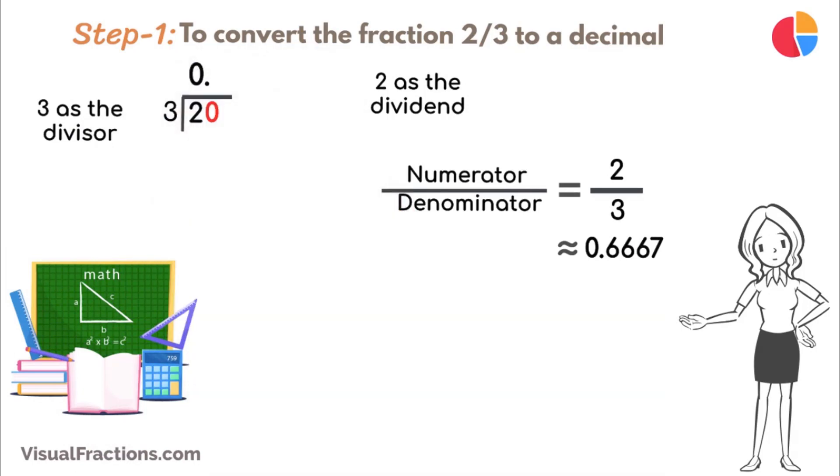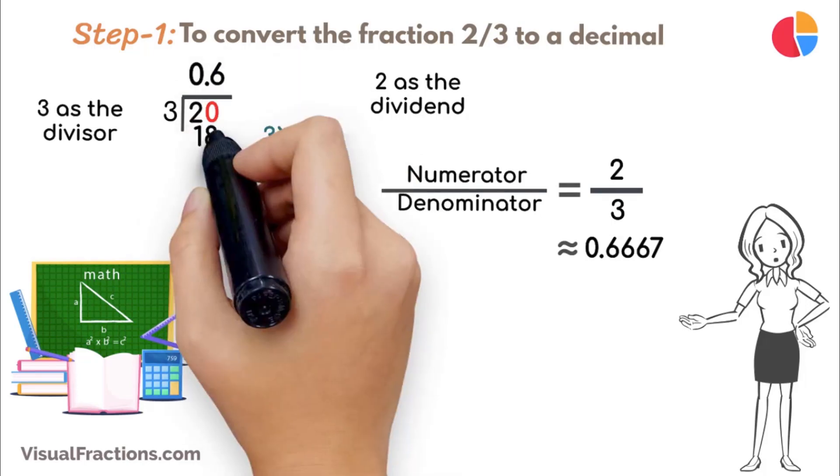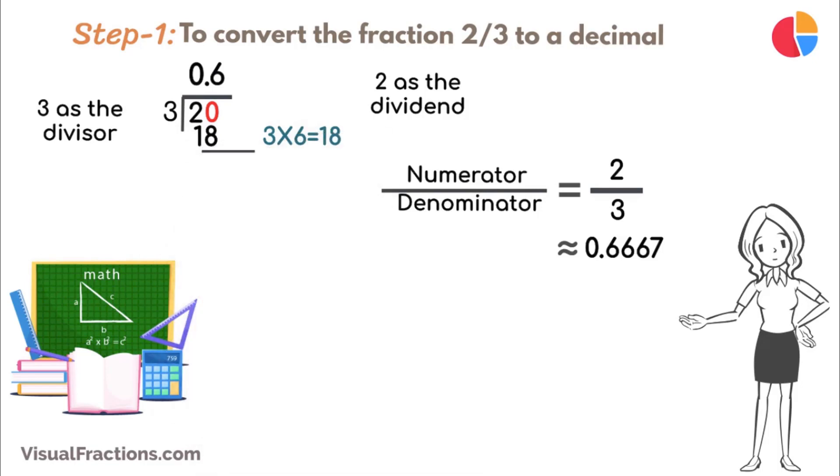3 goes into 20 six times, putting 0.6 in our quotient. Multiply 3 by 6 to get 18, and subtract this from 20, leaving a remainder of 2.